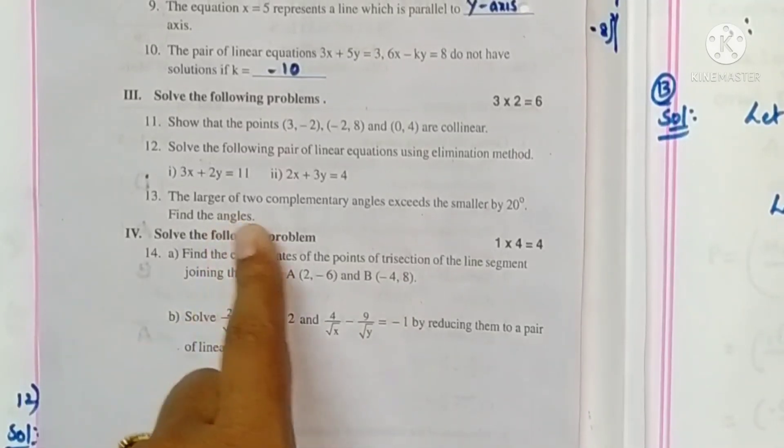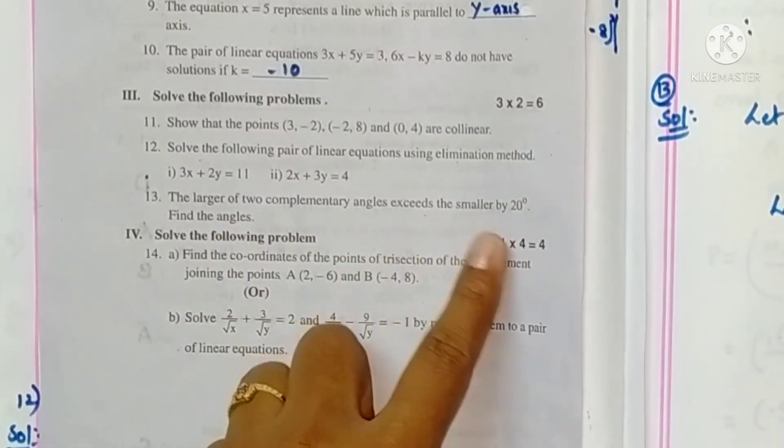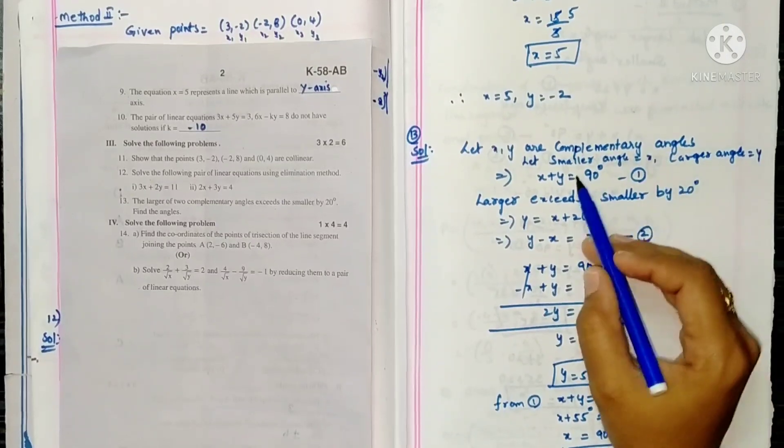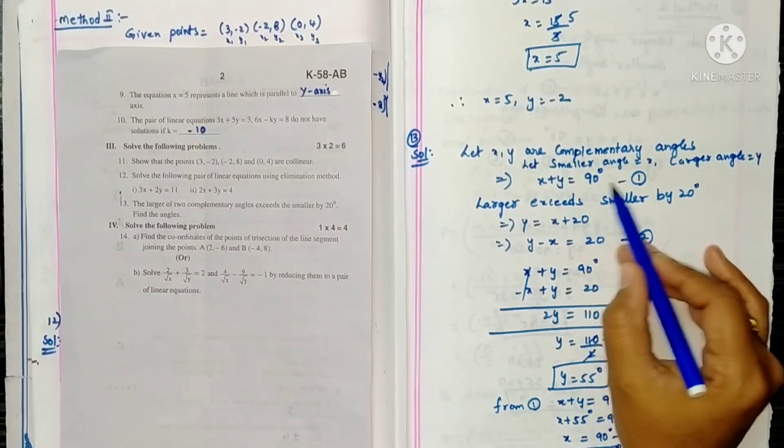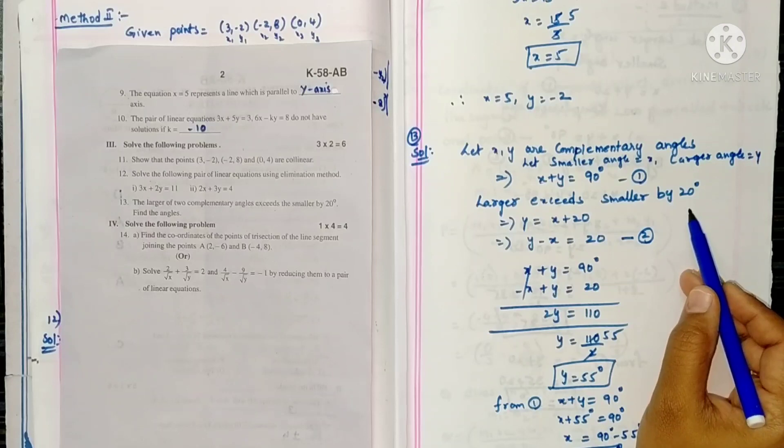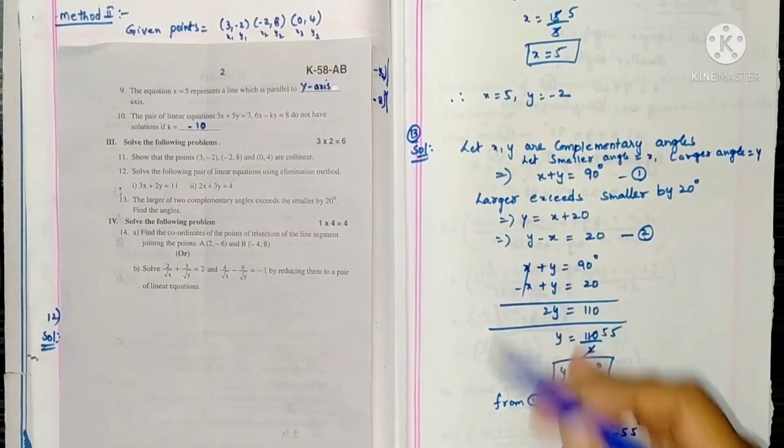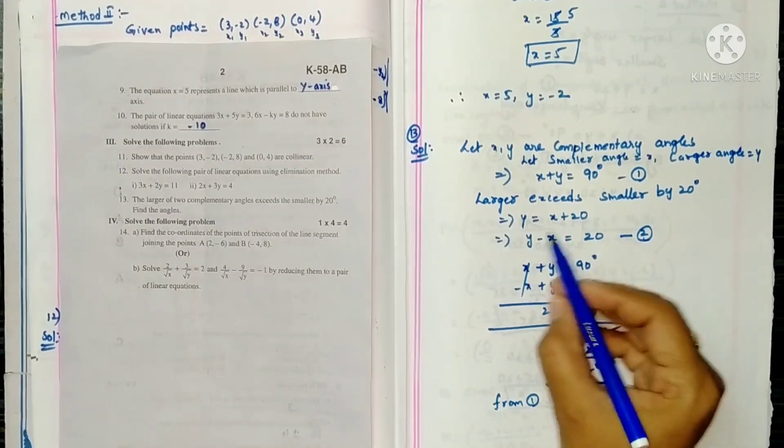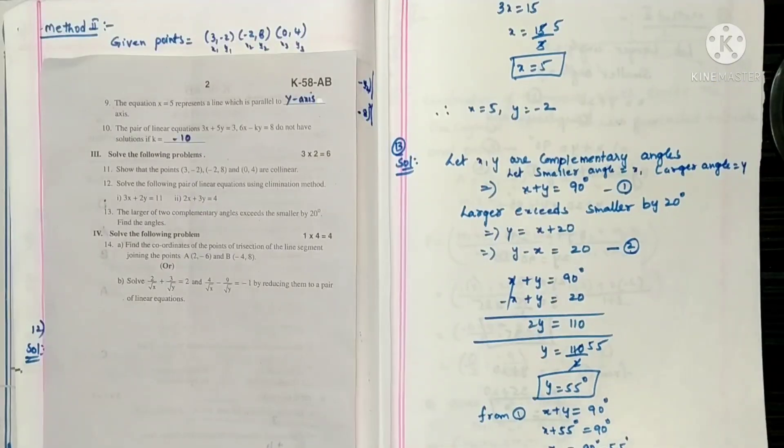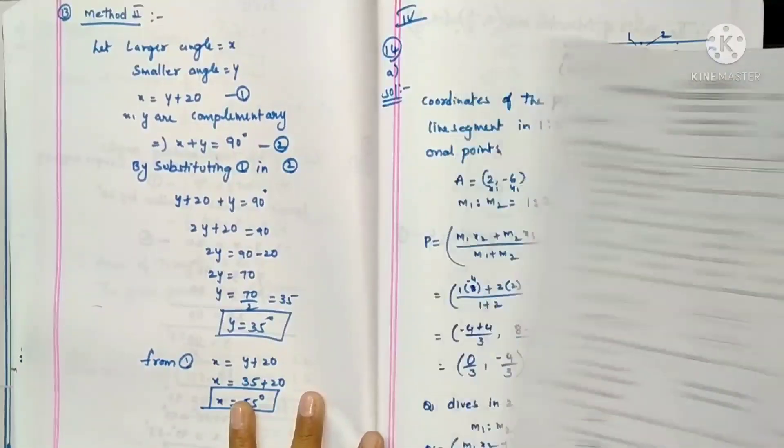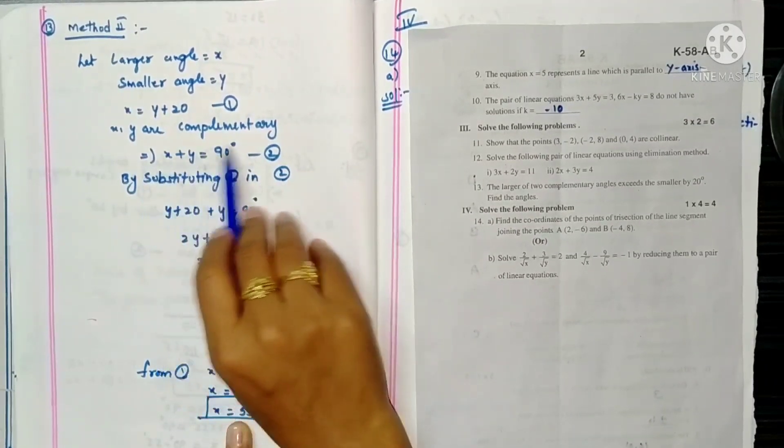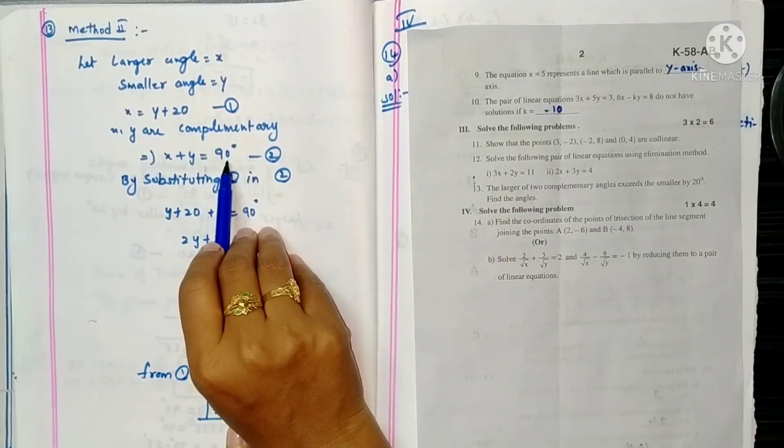Question 13, the larger of two complementary angles exceeds the smaller by 20 degrees, find the angles. Let x, y be complementary angles. Let smaller angle be x, larger be y. Complementary means sum of 2 angles is 90, that is equation 1. Larger exceeds smaller by 20, so y equals x plus 20, which means y minus x equals 20. You can solve this by elimination method or substitution method. Here if larger angle is x and smaller angle is y, then x equals y plus 20. They are complementary so x plus y equals 90. Substitute equation 1 in 2, we get y and x. You can solve by any method.